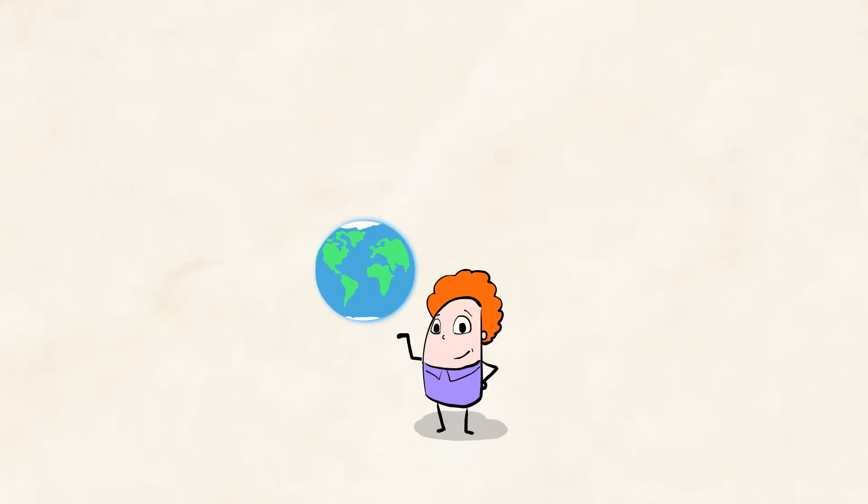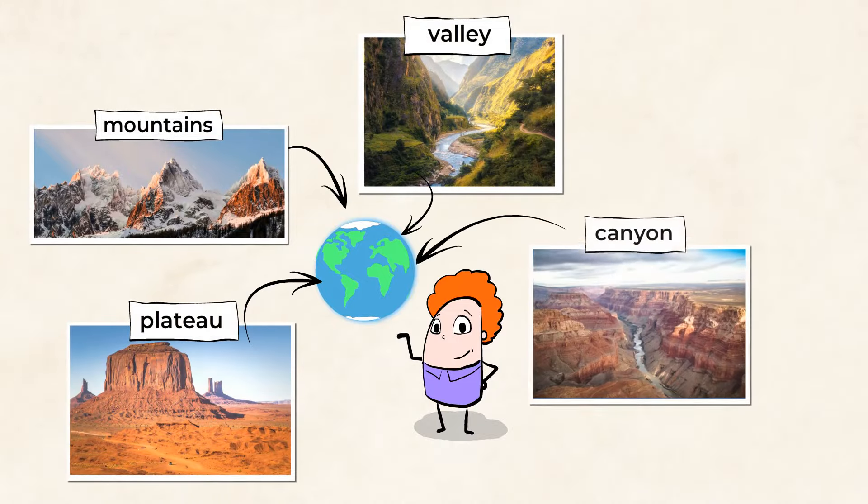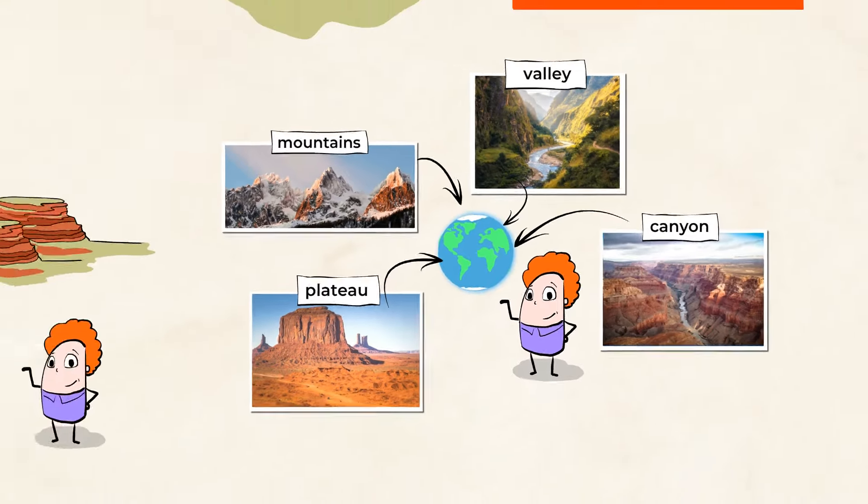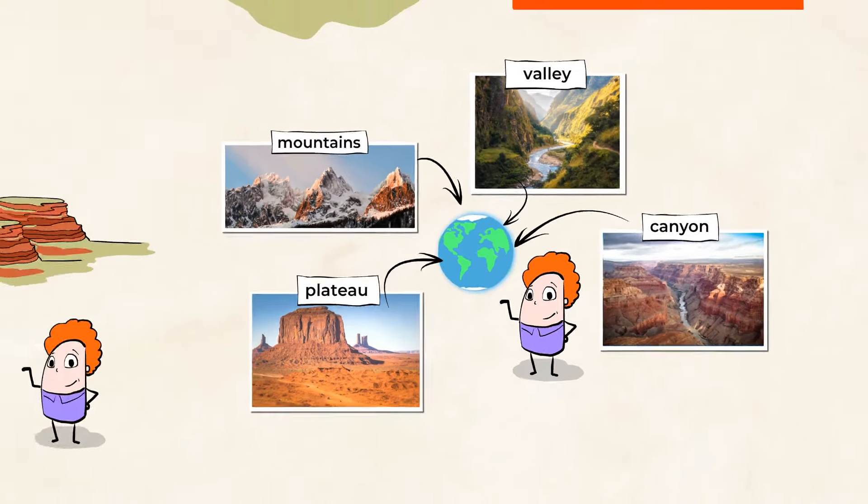By observing the land over time, we see small changes that will eventually create landforms like mighty mountains, valleys, plateaus, and canyons.